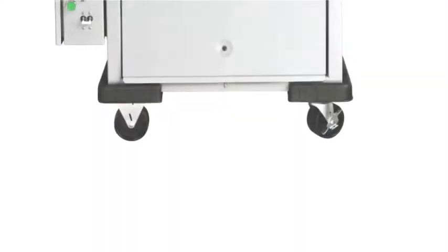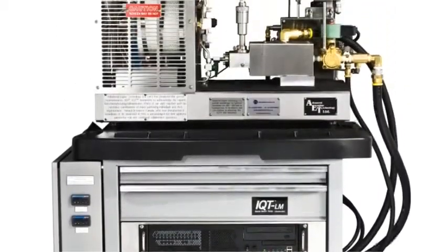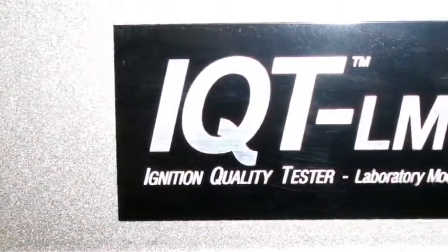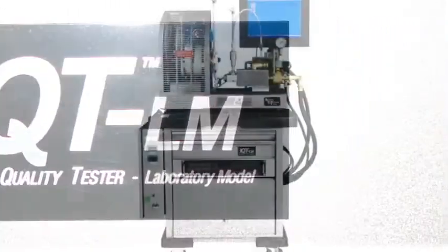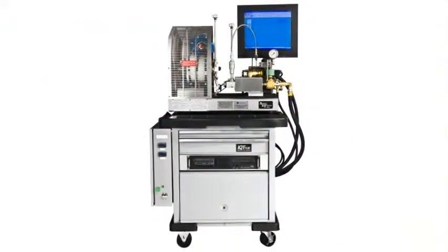The IQT is an instrument used to determine the derived cetane number of diesel and biodiesel fuels. It does this by injecting a fuel sample into its constant volume electrically heated combustion chamber and precisely measuring how long the fuel takes to begin combustion.